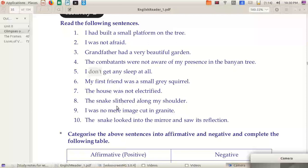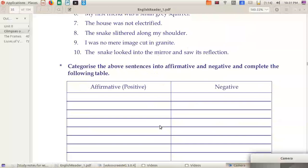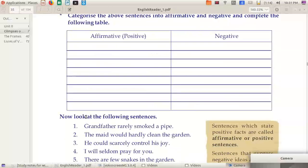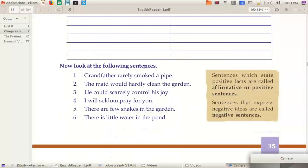The snake slithered along my shoulder - positive statement. I was no mere image cut in granite - negative sentence. The snake looked into the mirror and saw its reflection - it's a positive sentence.